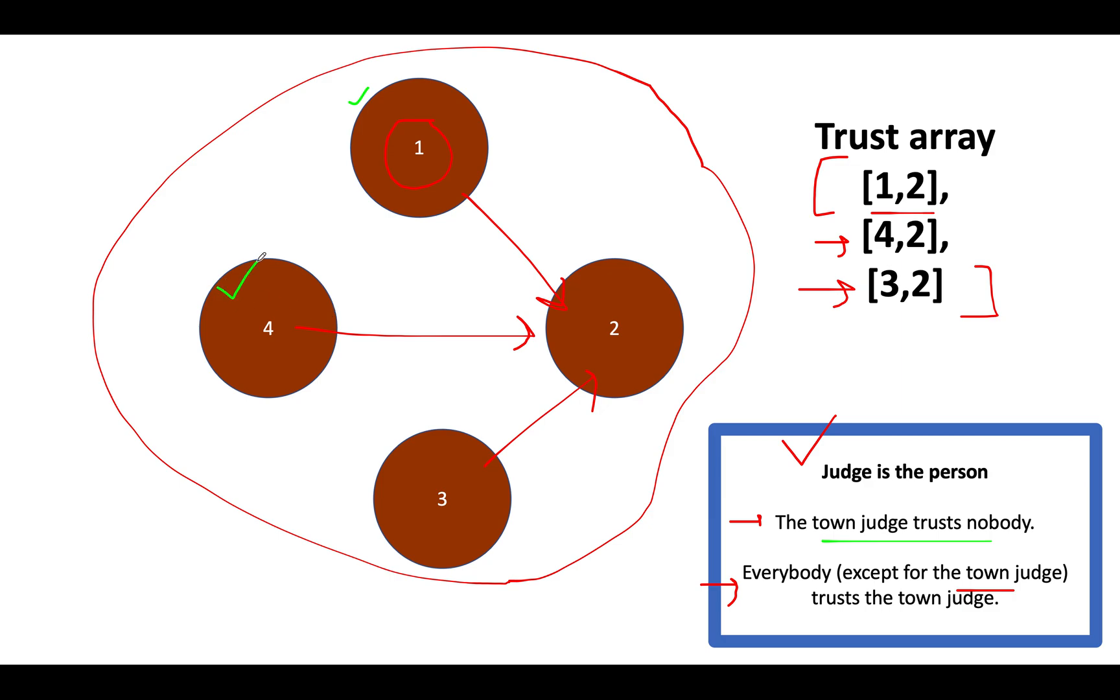Let's walk through the fourth node. It's also trusting the second node. That simply means, this condition is violated. Let's proceed ahead. Again, the third node is trusting the second node. This condition is again violated. Now, comes the most interesting part, the second node. Let's validate whether this condition is violated or not. We don't have any outgoing edge from second node. That means, this condition is satisfied. The second node doesn't trust anyone in the town.